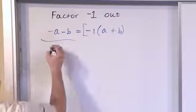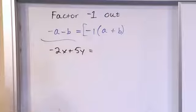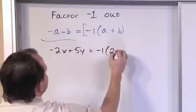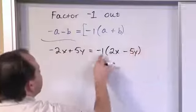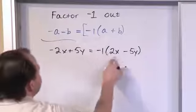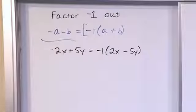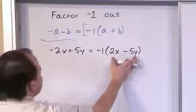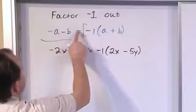What if you have negative 2x plus 5y and I want you to factor out a negative 1? Write negative 1 and open parentheses. Negative 1 times what gives negative 2x? It has to be positive 2x. Negative 1 times what gives positive 5y? It has to be negative 5y, because negative times negative gives positive. Notice the pattern: this was negative, it became positive; this was positive, it became negative. Factoring out negative 1 just flips all the signs.